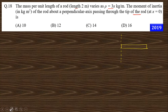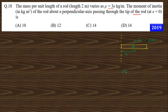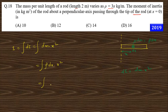For that, we take a small strip dx at distance x from the tip. The mass of this strip will be lambda times dx, or rho times dx. The moment of inertia of that portion, dI, will be dm times x squared. So the total moment of inertia I can be written as the integration of dI, which is integration of dm times x squared. The value of dm is rho dx times x squared, and rho is given as 3x. So this becomes 3x dx times x squared.